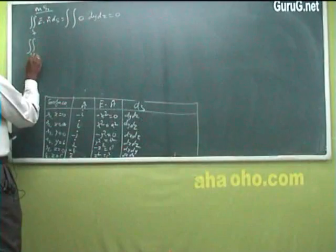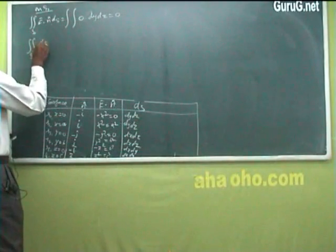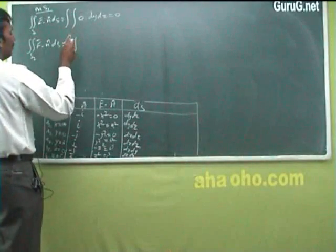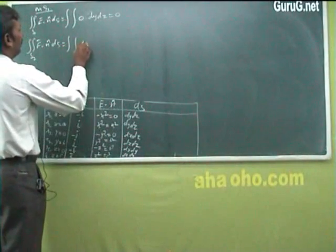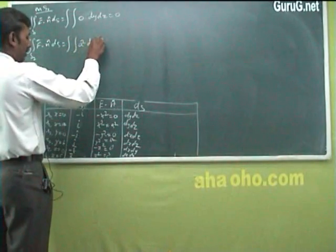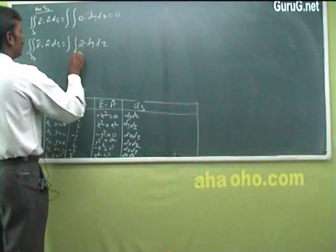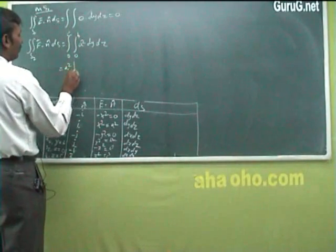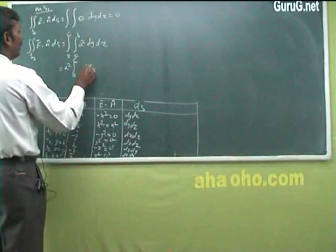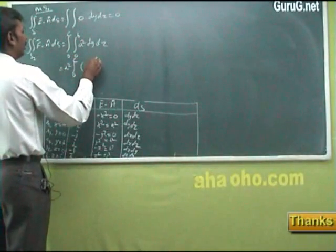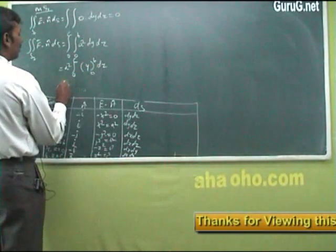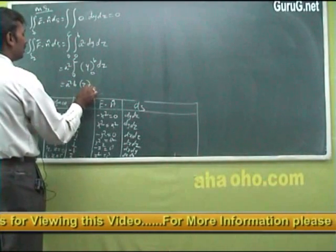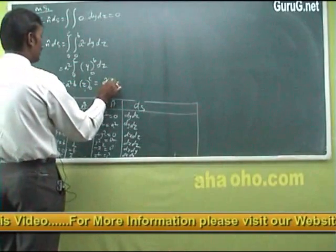On S2 (x = a): the integral of F·n̂ dS equals the double integral of a² dy dz, with y from 0 to b and z from 0 to c. This gives a² · [y from 0 to b] dz = a²b integrated from 0 to c, giving a²bc.